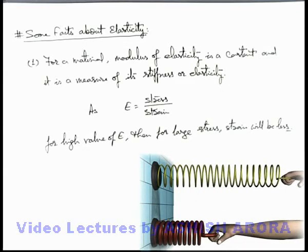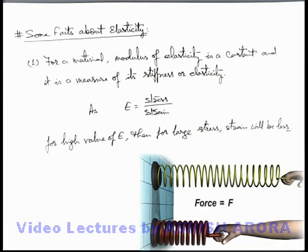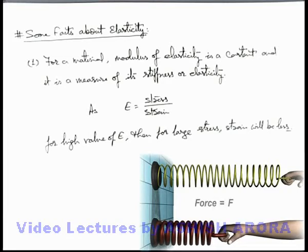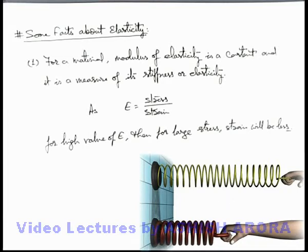Elongation will be more, so strain is more. And in case of second spring, where almost the area of cross section is equal, or the stress applied is equal, we can say in this situation the elongation will be relatively less. So we can say the second spring is more stiffer than the first spring. So here in case of second spring, modulus of elasticity is high.